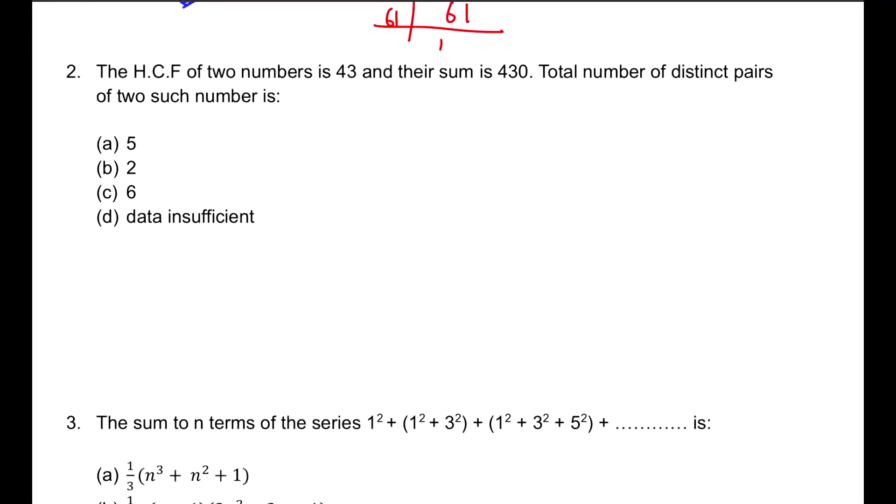The HCF of two numbers is 43 and their sum is 430. Total number of distinct pairs of such numbers is what? I need two numbers which have HCF as 43, condition number 1, and condition number 2: if I add these two numbers I should get 430. What should be done? Assume the numbers are X and Y.